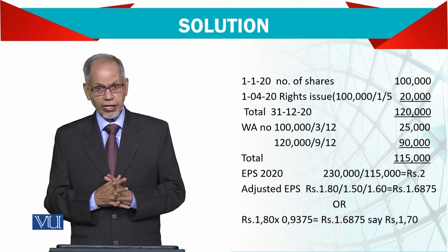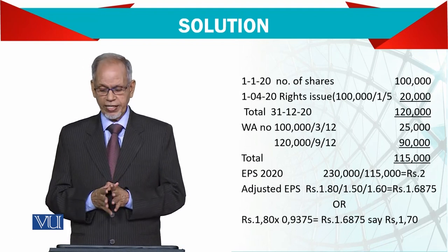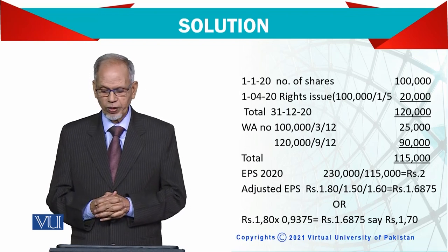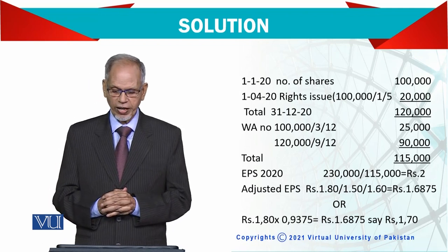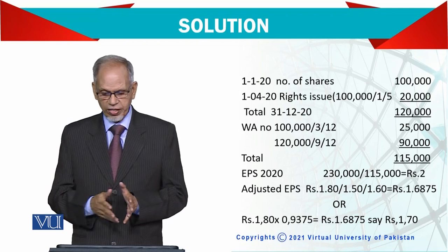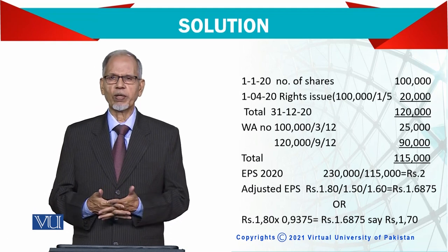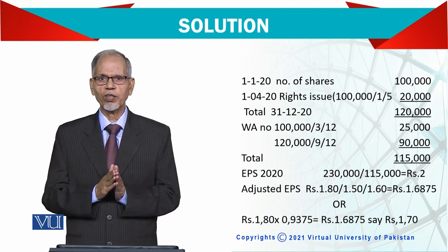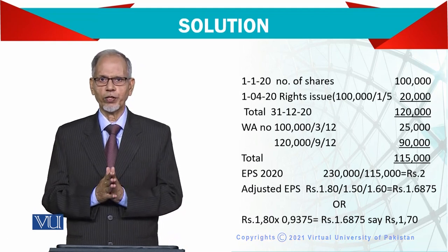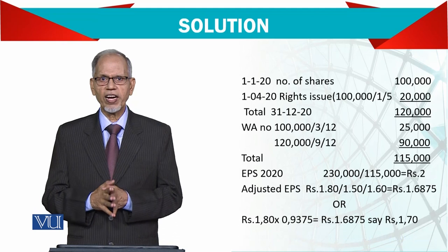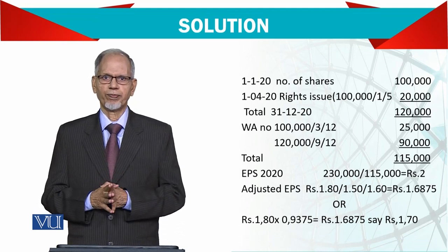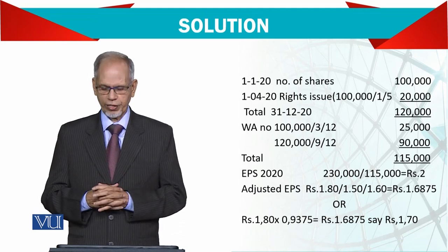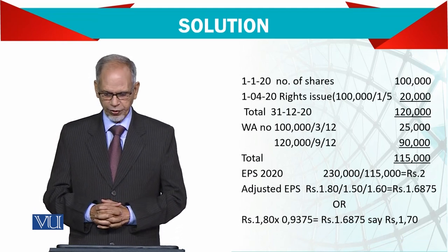The prior year 2019 earnings of 1.8 are adjusted using the fraction, giving approximately 1.6875, which rounds to around 1.7. This is how the rights issue affects the earnings per share — it usually reduces it. Thank you very much.